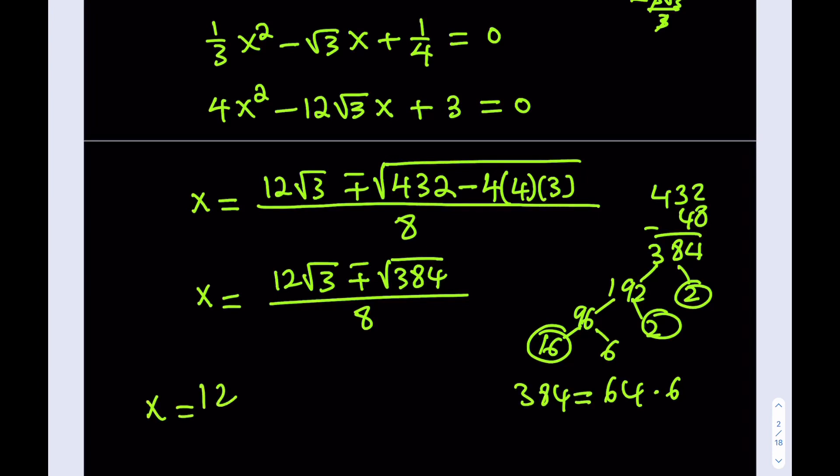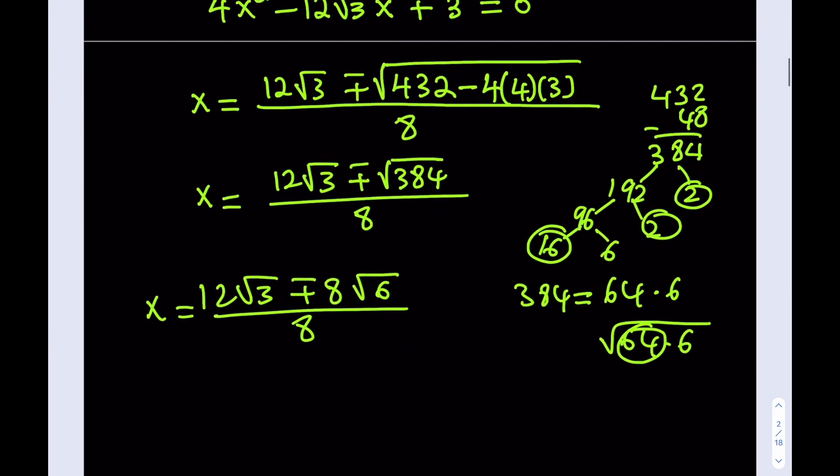Let's write that: 12 root 3 plus minus... when you write it that way, the square root of 64 is going to be 8, so this is going to give you 8 times the square root of 6 all over 8. Now, as you can see, everything can be divided by 4. Let's do that and split up our expression. After division by 4, it's going to be 3 root 3 plus 2 root 6 divided by 2. Let's call that x1. And x2 is going to be 3 root 3 minus 2 root 6 all over 2.